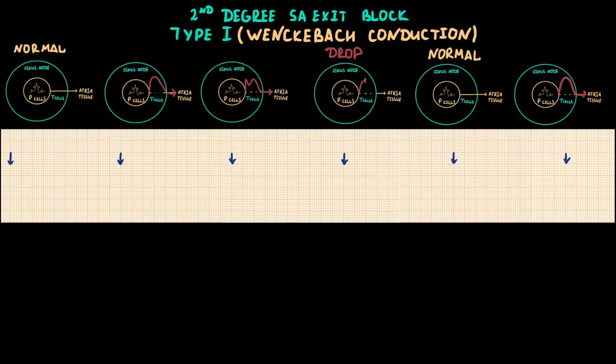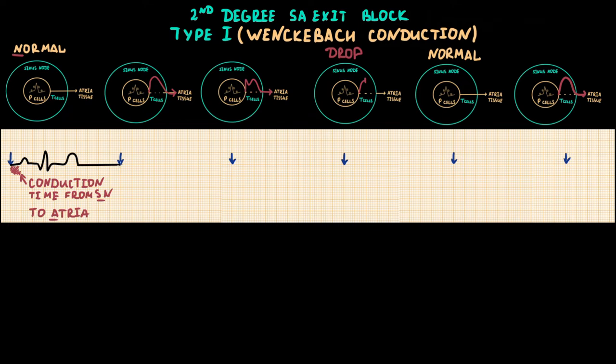Since sinus node depolarization can't be detected by ECG, for understanding let's mark it with blue arrows. The sinus node regularly makes impulses, so the distance between the arrow and the P-wave is the conduction time between the sinus node and atrial tissue. For second degree SA block type 1, this distance should increase from beat to beat until the drop. A key feature of Wenckebach conduction is that the lengthening of conduction time is not uniform — the maximal lengthening occurs in the second PQRST complex.